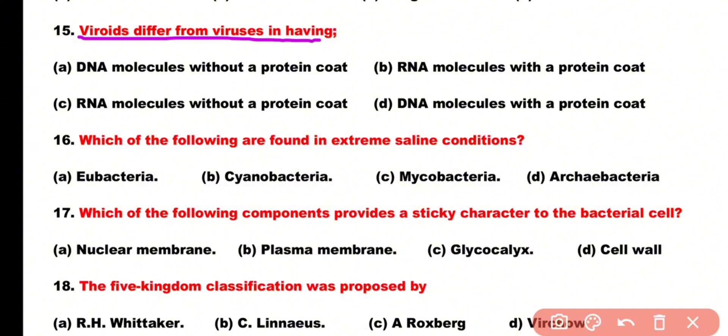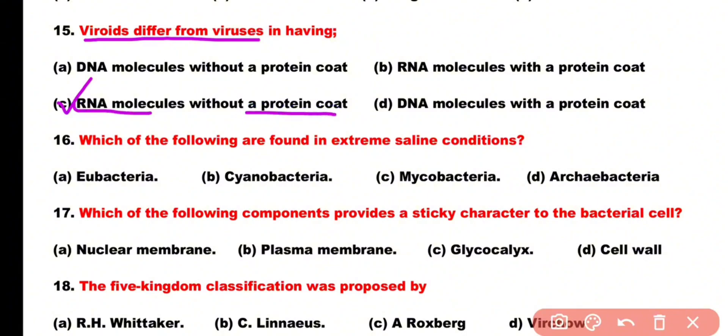Question number 15: Viroids differ from viruses in having: DNA molecule without a protein coat, RNA molecule with a protein coat, RNA molecule without a protein coat, or DNA molecule with a protein coat. Correct answer is option C. Viroids differ from viruses because viroids only have an RNA molecule and the protein coat is absent.